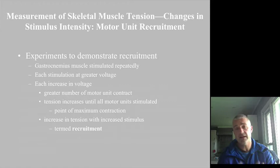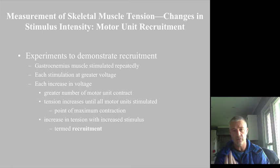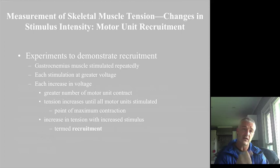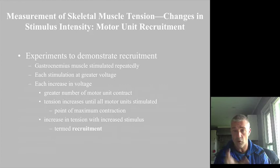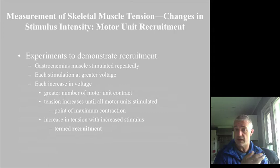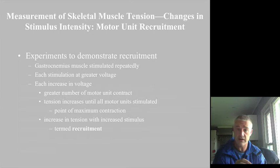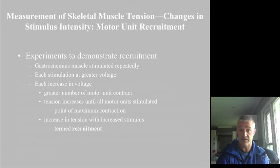In this experimental setting, they looked at recruitment by turning up the voltage. When you turn up the voltage, you stimulate more muscle fibers to depolarize, which means a stronger contraction. In the body, this means stimulating more motor units to send a signal to contract. In the experiment, increasing voltage produces increased tension until you reach maximal contraction where all muscle cells are being stimulated. This idea is recruitment.